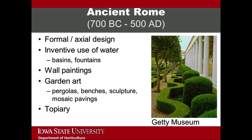The gardens of ancient Rome occurred between 700 BC and 500 AD. The Romans of this time period are believed to have been the greatest builders in history, and their buildings were spread across Europe, Asia, and Africa. The widespread size of the Roman Empire ultimately influenced the highly developed garden culture of the time, and Roman aristocrats had the first gardens solely for pleasure. These ancient Roman gardens were very similar to the gardens of ancient Egypt — the gardens had a formal and axial design and included numerous water features used as basins or fountains. Garden art also played a prominent role in Roman gardens, which included wall paintings, pergolas, benches, sculpture, and mosaic pavings.